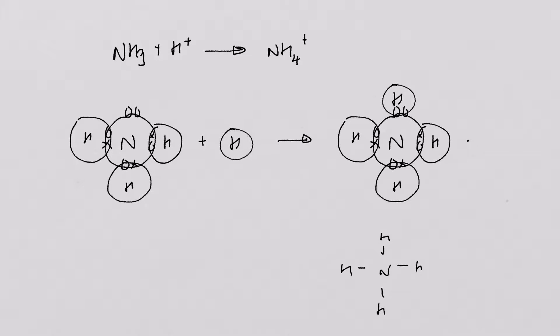This bond here is this set of electrons here. And both these electrons have come from the nitrogen. We can show that on our diagram by adding an arrow in there. And it's important to say that those four bonds down here now are completely indistinguishable from each other. That's just nitrogen bonded to hydrogen four times.